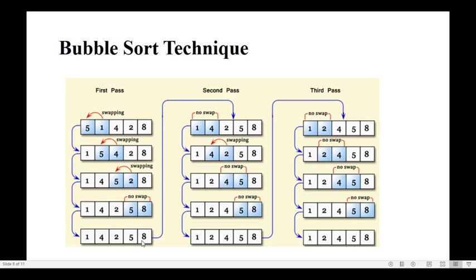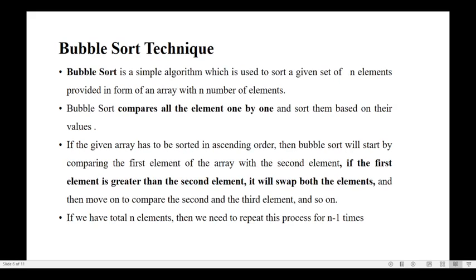This is how bubble sort works — it starts comparing from the first number to the second number. If the first number is greater than the second number, swapping happens. If the first number is not greater, no need to swap; you just move on to the next pair. The largest element naturally bubbles to its correct position at the end.